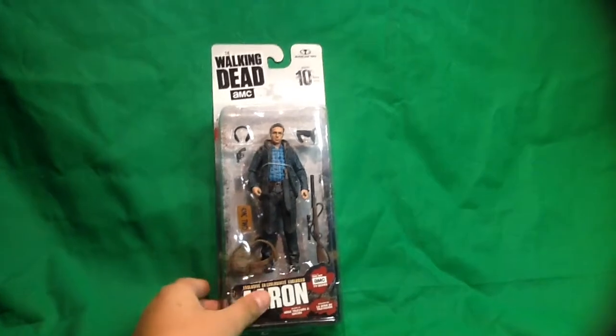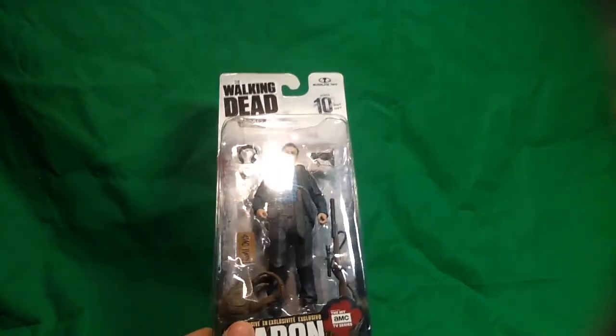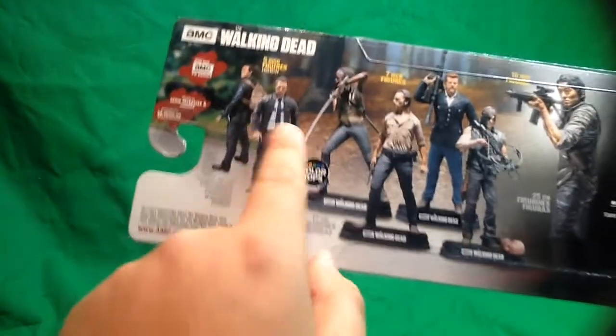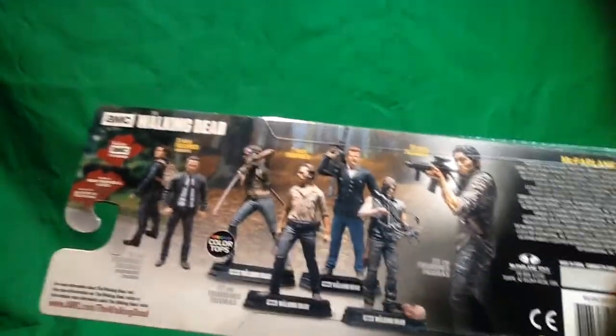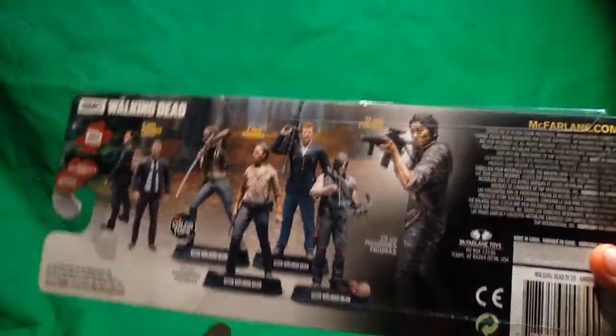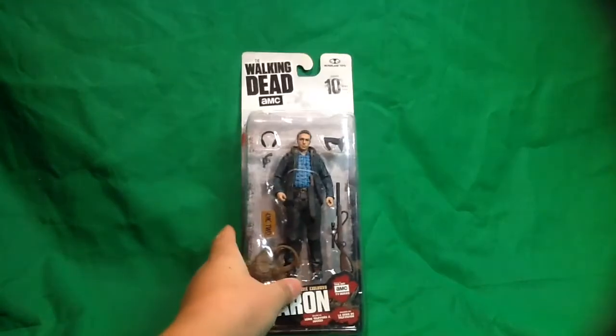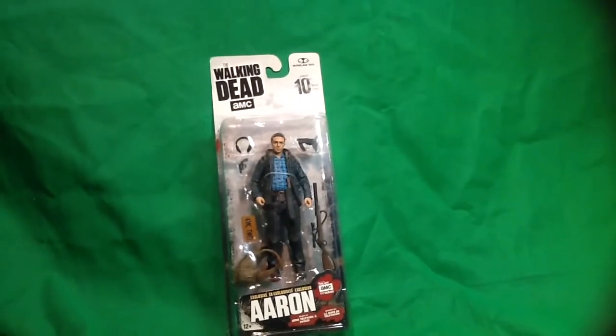So here we go. Aaron comes with a ton of accessories. I can't remember the last time we got this many accessories on a figure. On the back here, we can see that if you guys remember when I reviewed the Rick, Aaron was not there, so they didn't show him at all. And they all of a sudden put him right there behind Rick. And here we have the other Color Tops. I don't know why Carl's not there.